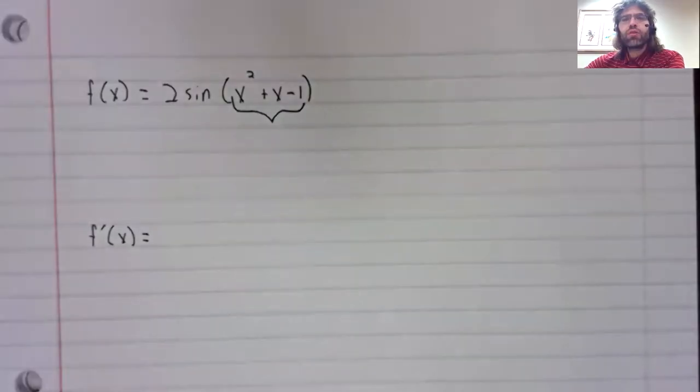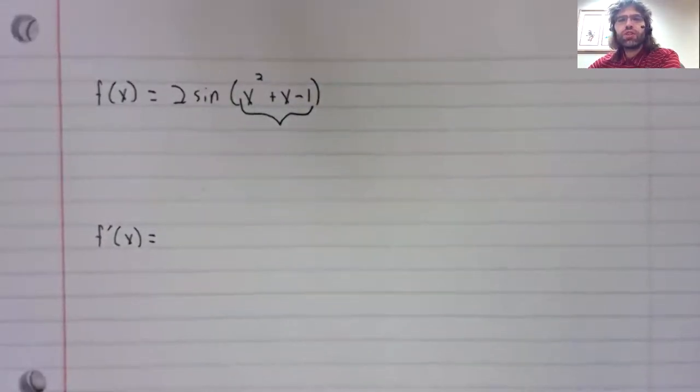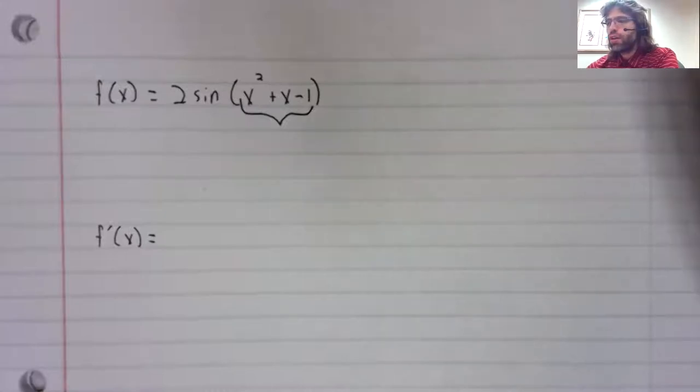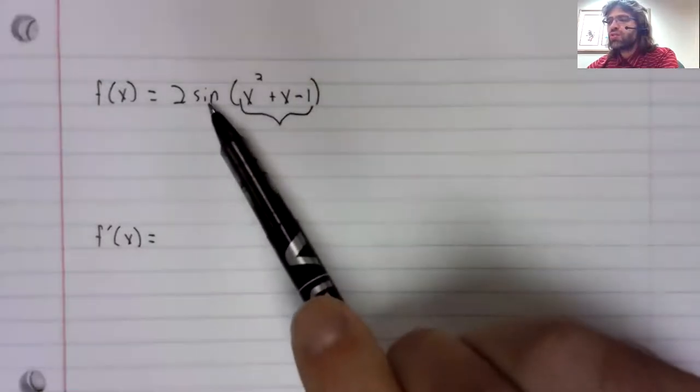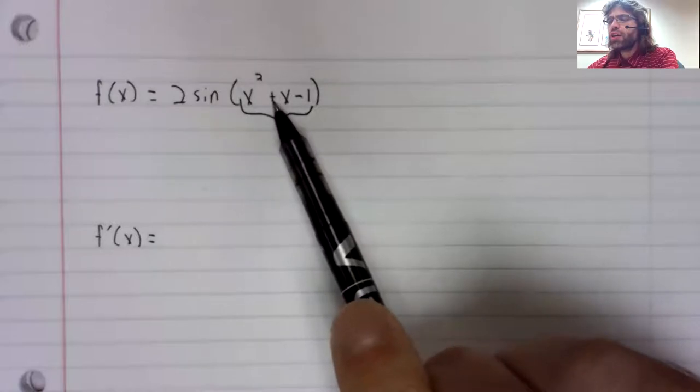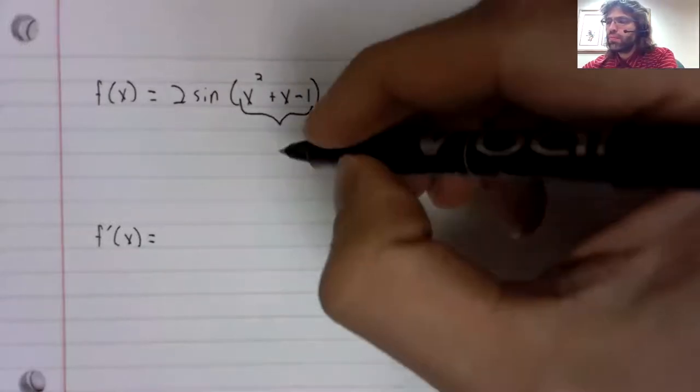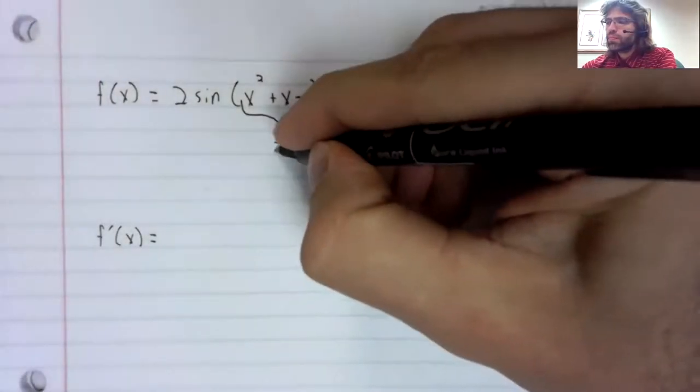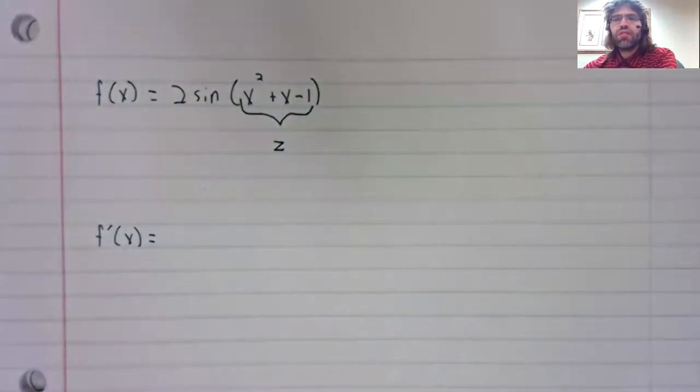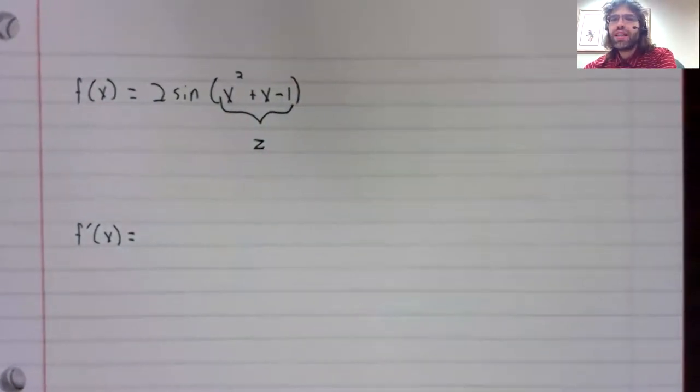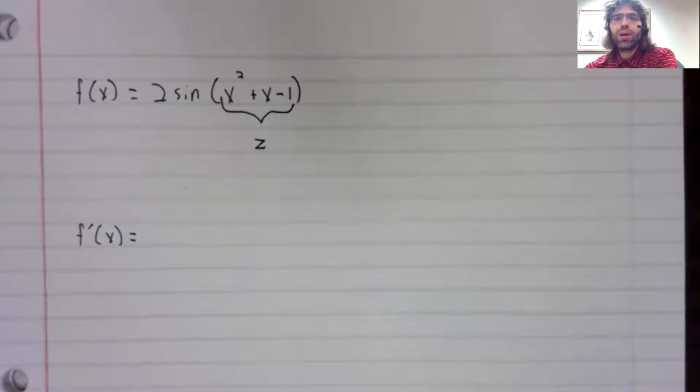Using version one of the chain rule, you'd say, well, this is the sine of a function. Let's give that function a name, let's call it z.